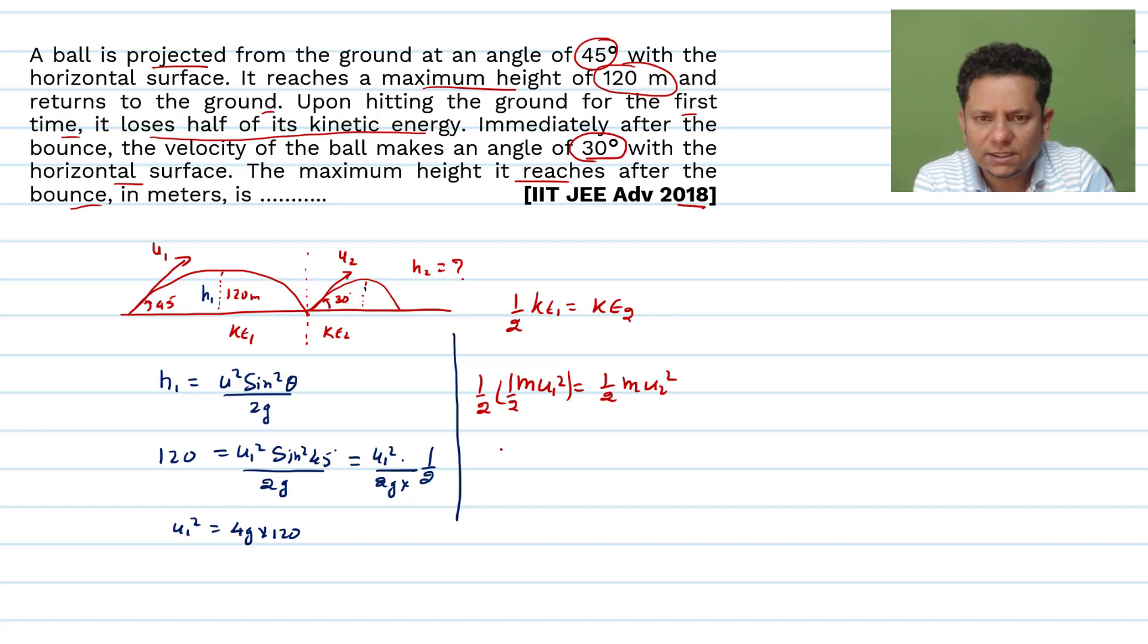So we can say that u2 squared will be equal to half u1 squared. And u1 squared will be equal to half of 4g multiplied by 120.